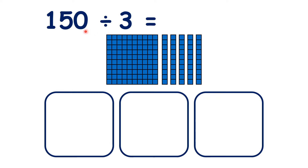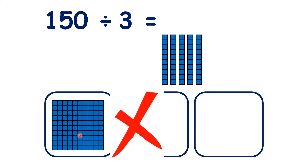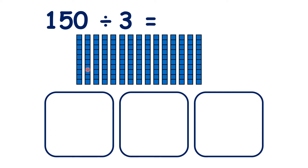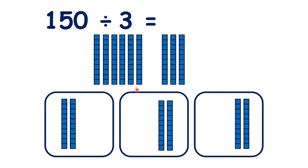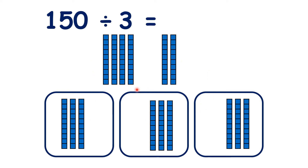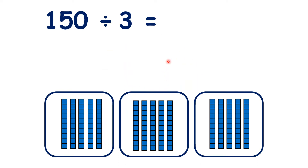We could also think of 150 divided by 3 as sharing 1 hundred and 5 tens — so that's 150 — between 3 groups. But we can't share out our 100, because when we divide by sharing we need the same amount in each group. So instead, we need to break up our 100 into 10 tens. That now gives us 15 tens altogether, and when we share out those 15 tens we have 5 tens in each group.